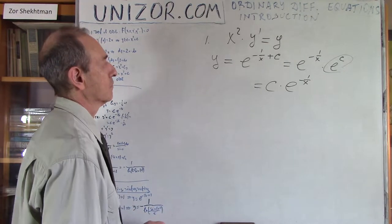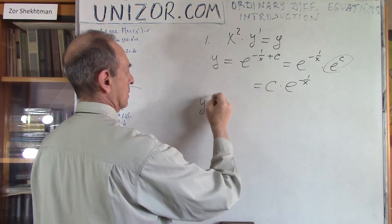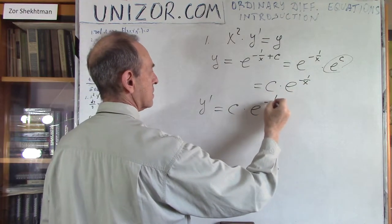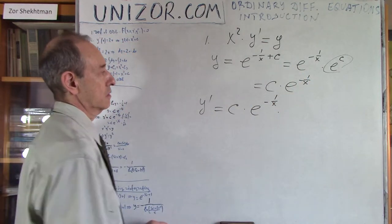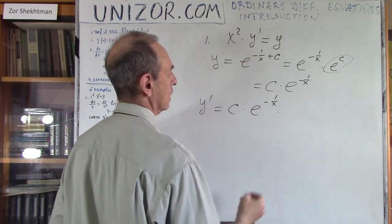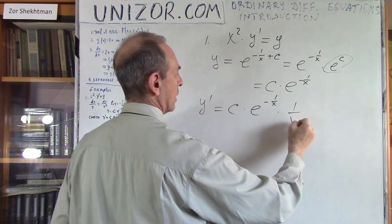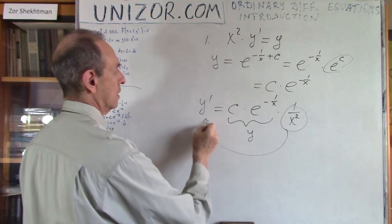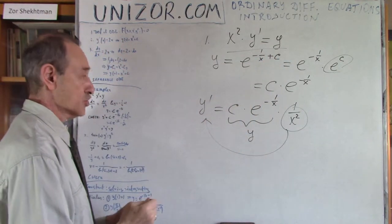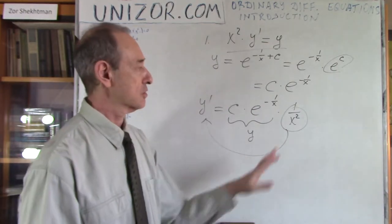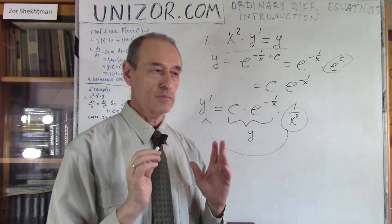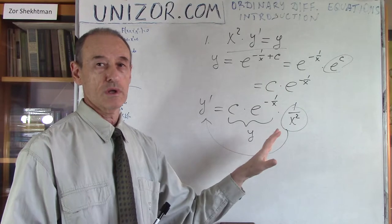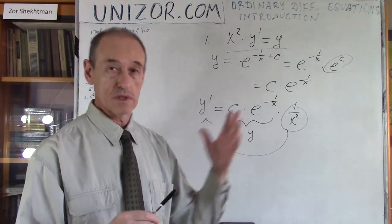Let's verify: y' equals c times the derivative of e^(-1/x), which by the chain rule gives c · e^(-1/x) · (1/x²). This is y · (1/x²), so x²y' = y. It checks out. I did not pay attention to the case where x = 0, but as a general idea of how to approach these differential equations, the solution is presented.